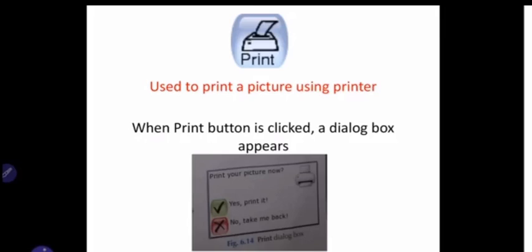A dialog box will appear on the screen asking whether you want to print your picture now or not - 'Yes, print it' or 'No, take me back'. If the printer is available, click on 'Yes, print it' and your drawing will come on paper as a hard copy. Otherwise, if the printer is not available, click on 'No, take me back'.